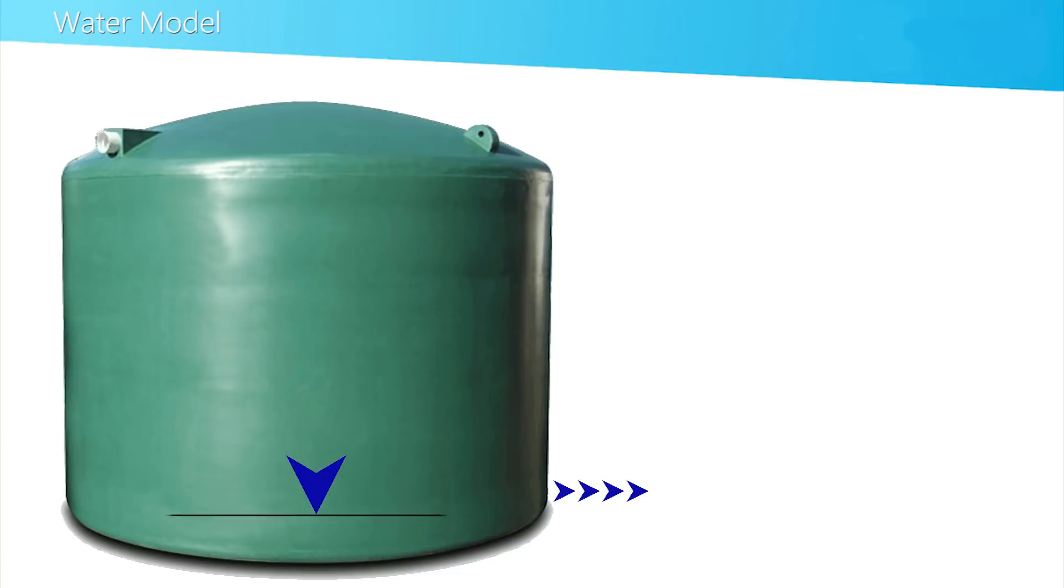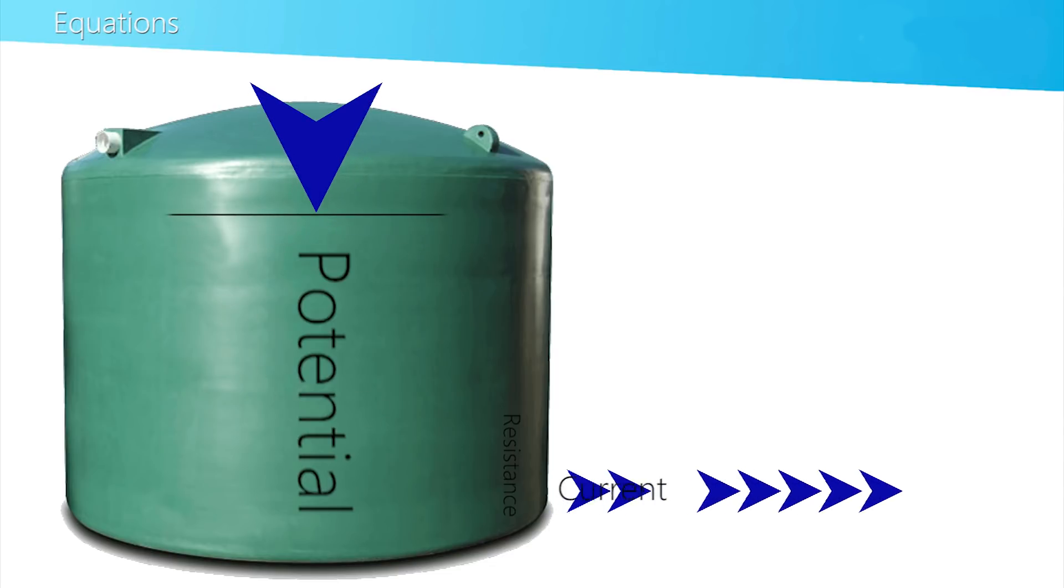We know that the larger the head of water above the tap, the higher the pressure would be and the greater the current for a given hole diameter. The head of water is forced through the hole by gravity. The higher the water, the greater the potential energy.